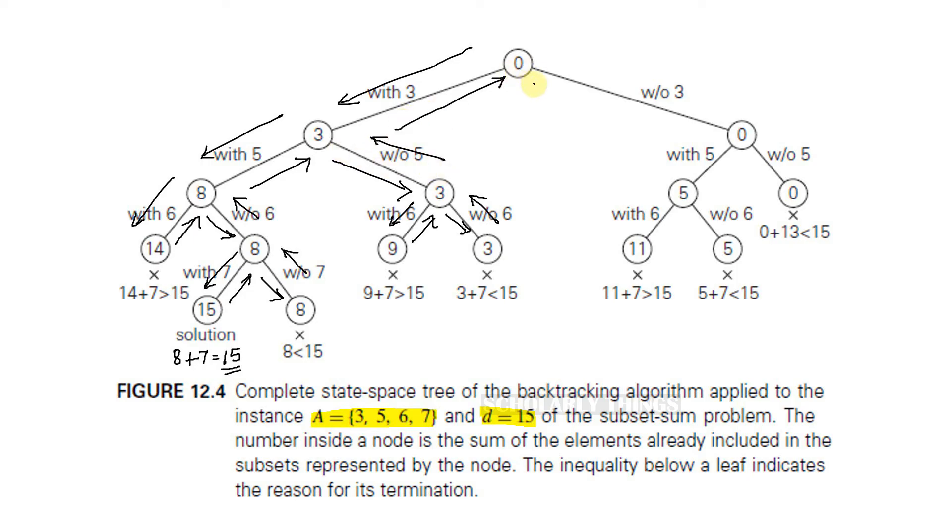At this stage, the other option is to check without including 3. Sum is still 0. Then I can include 5. Sum is 5. I can include 6. Sum becomes 11.